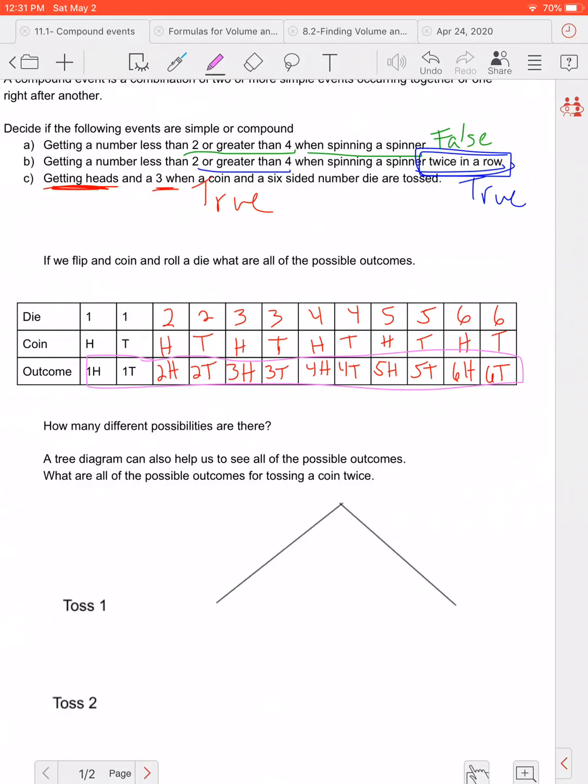Okay so there's twelve total outcomes and we've talked about that before with our probability. So the outcomes are very important with compound events.